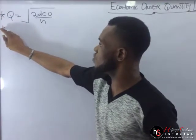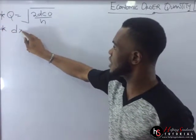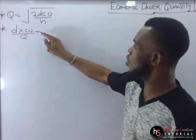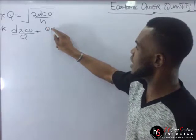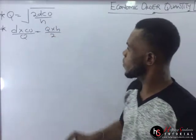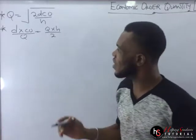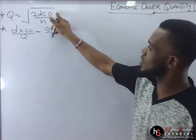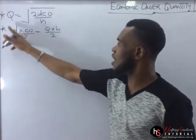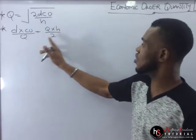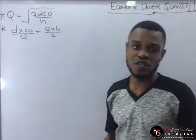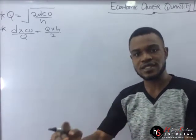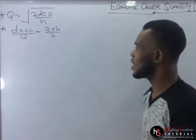The second thing I would also like you to remember is this: D times CO divided by Q is equal to Q times H over 2. Take note of this — it is very, very important. With this formula, this is how we derive towards the EOQ. Ordinarily, this is the total ordering cost, and this is the total holding cost. Let's take it step by step, one after the other.